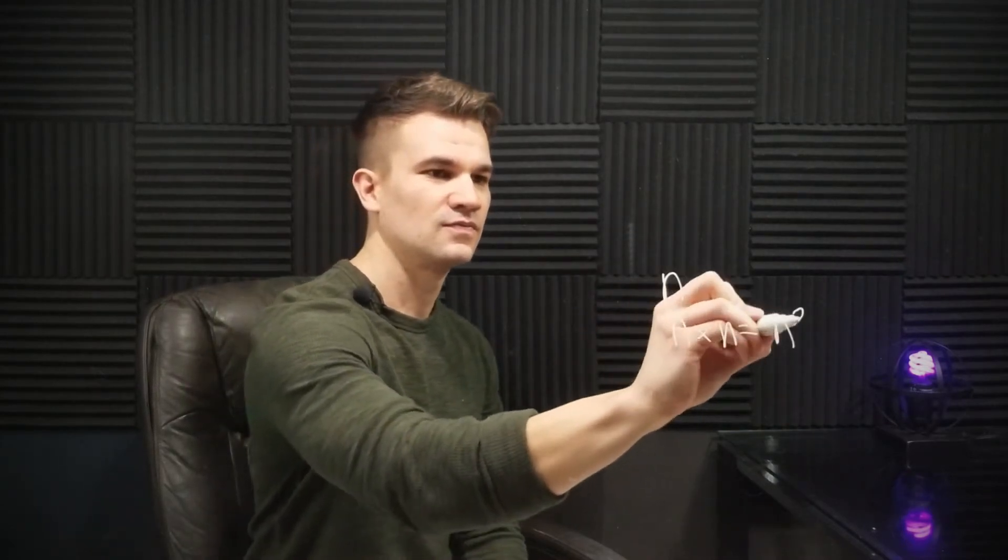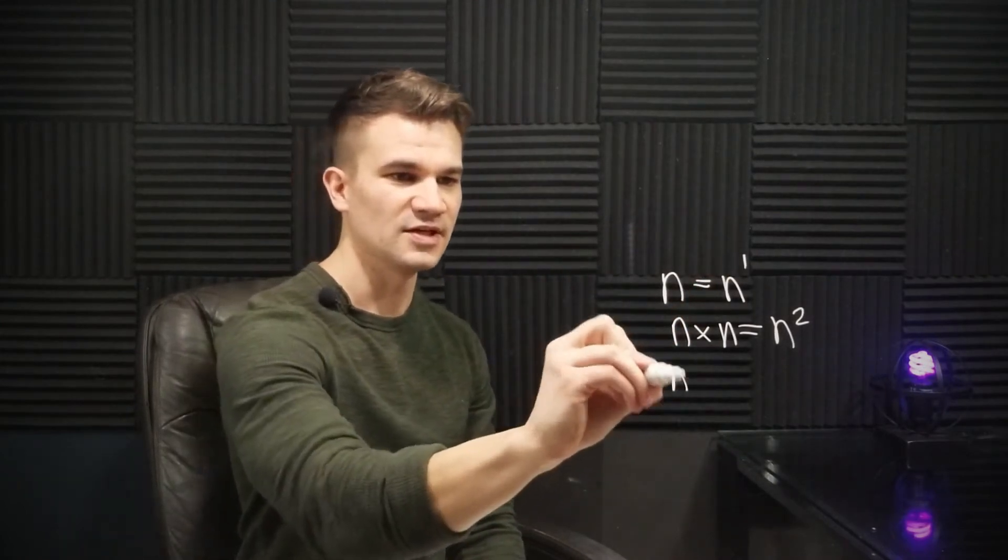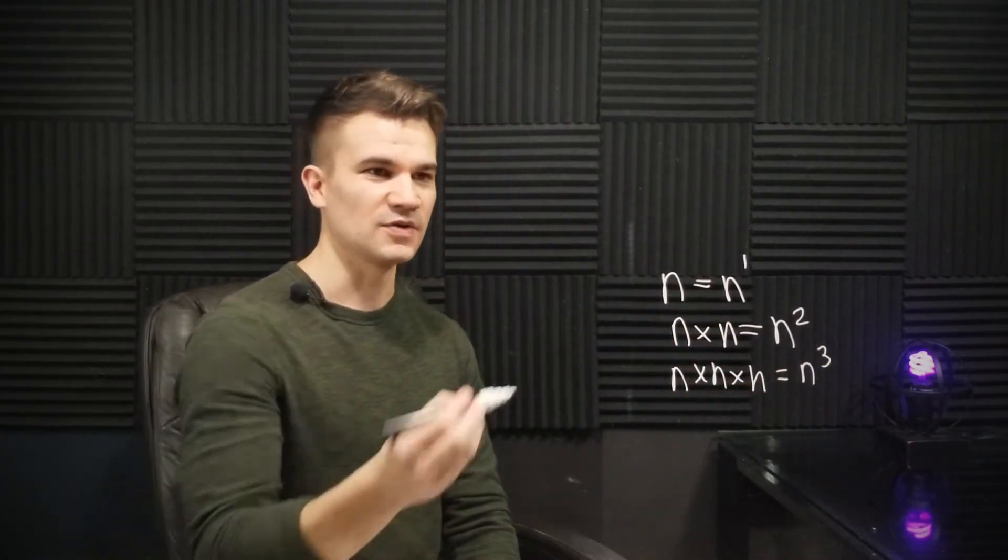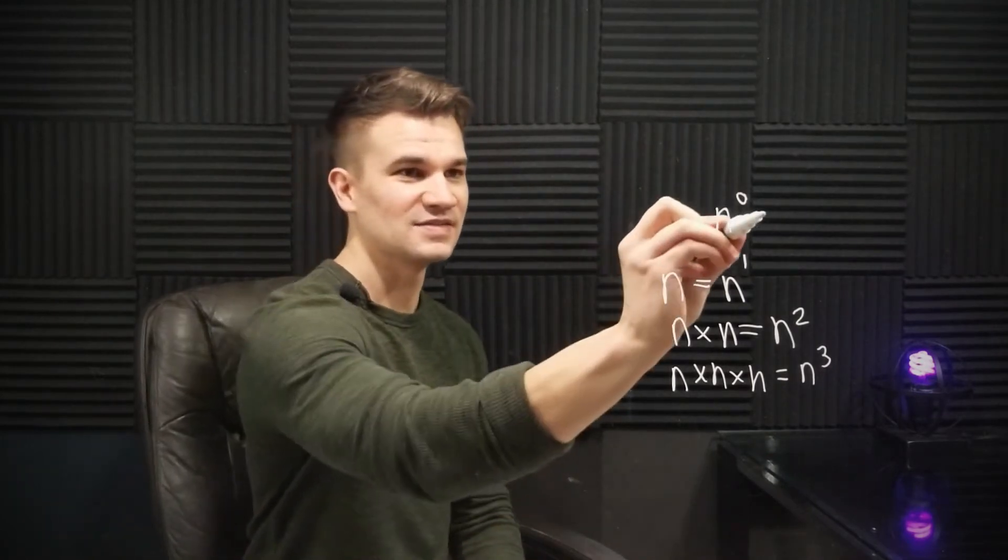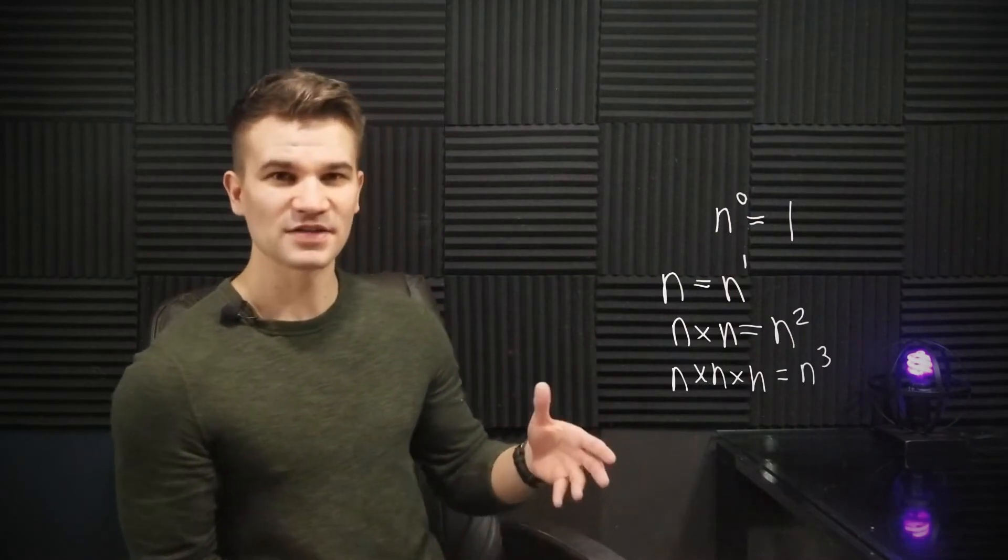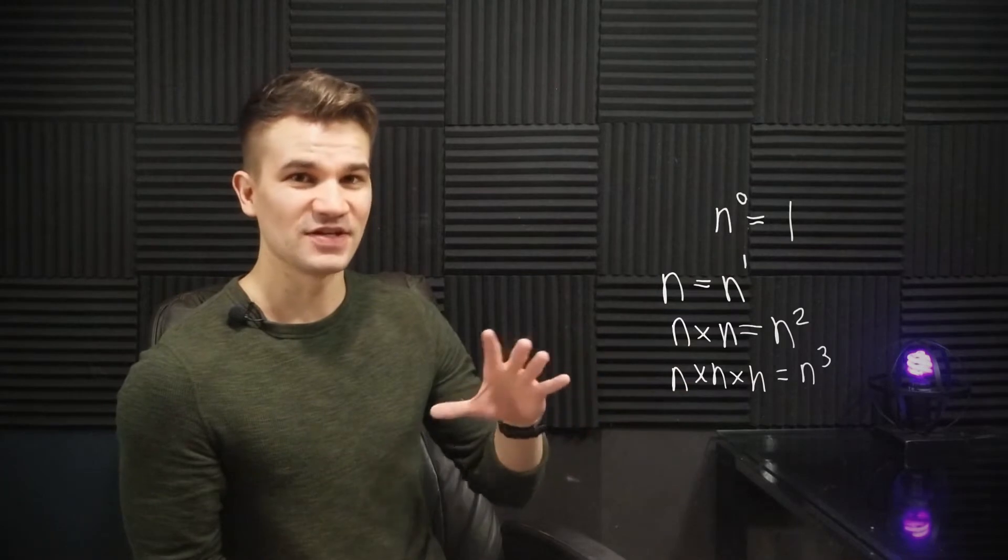Well, we have n, then we can look at n times n, this is n squared. And this is n to the first power, of course. And then n times n times n is n cubed. But what is n to the zero power? That's the empty product, and it is one. Now it may seem strange to you that the product of no numbers is one, but I'm going to show you that this is actually a very natural thing.